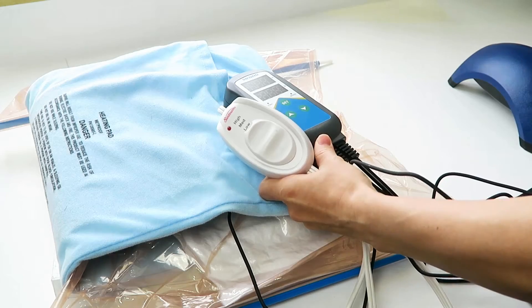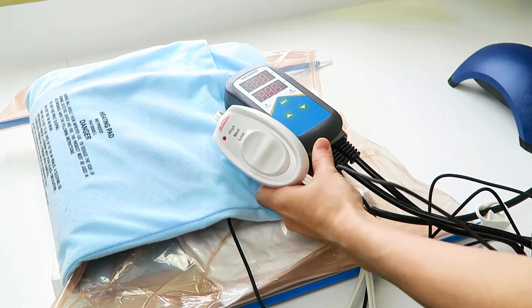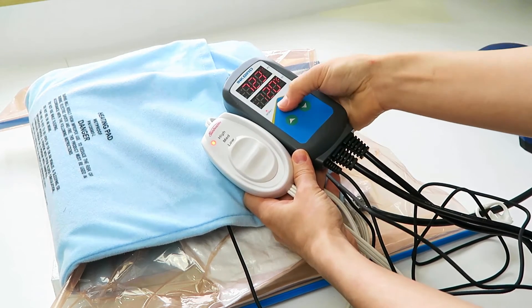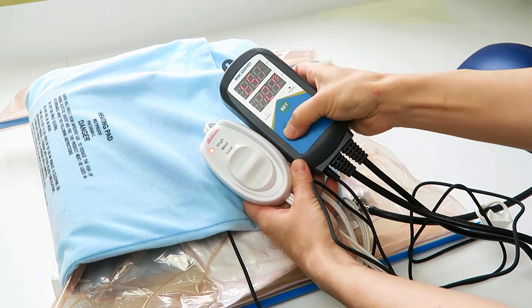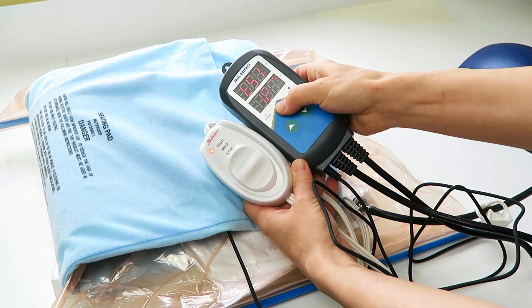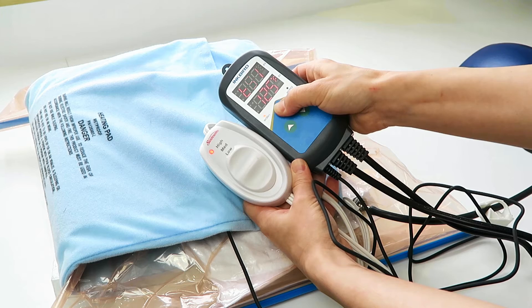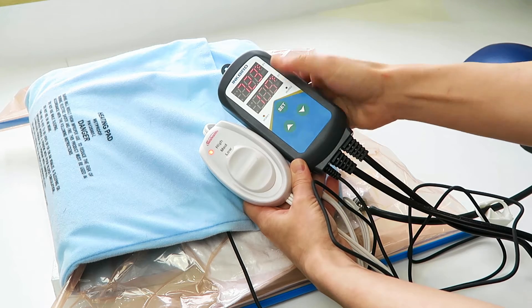Instead, plug the heat source into an Inkbird temp controller. Attach the heat probe to the part. Press and hold the set button, arrow to the maximum temperature you want, and press and hold set again to confirm. The controller will automatically cycle on and off to maintain your set temp.